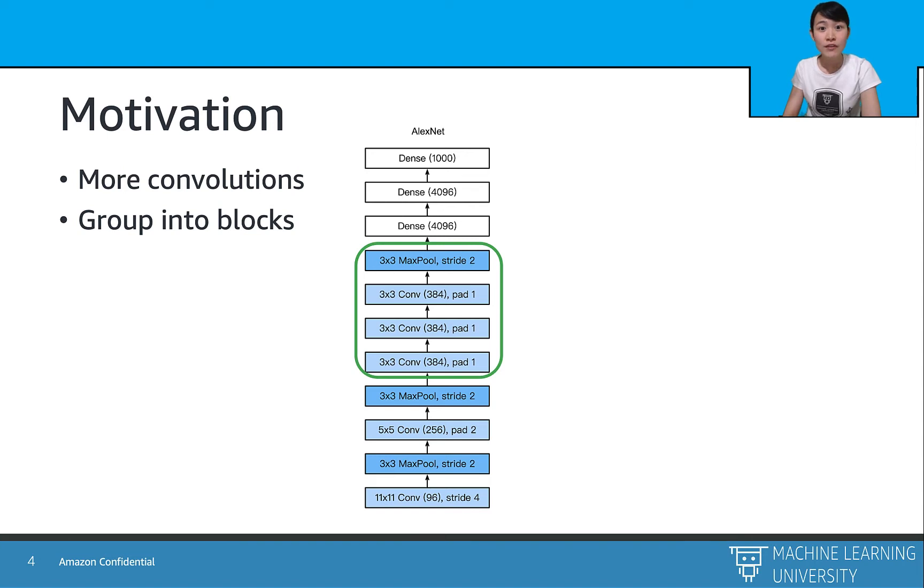So one of the choices is just duplicate the similar layer structures in the block, and then we can stack the block to the deeper neural network. That is the idea of VGGNet and VGG blocks.